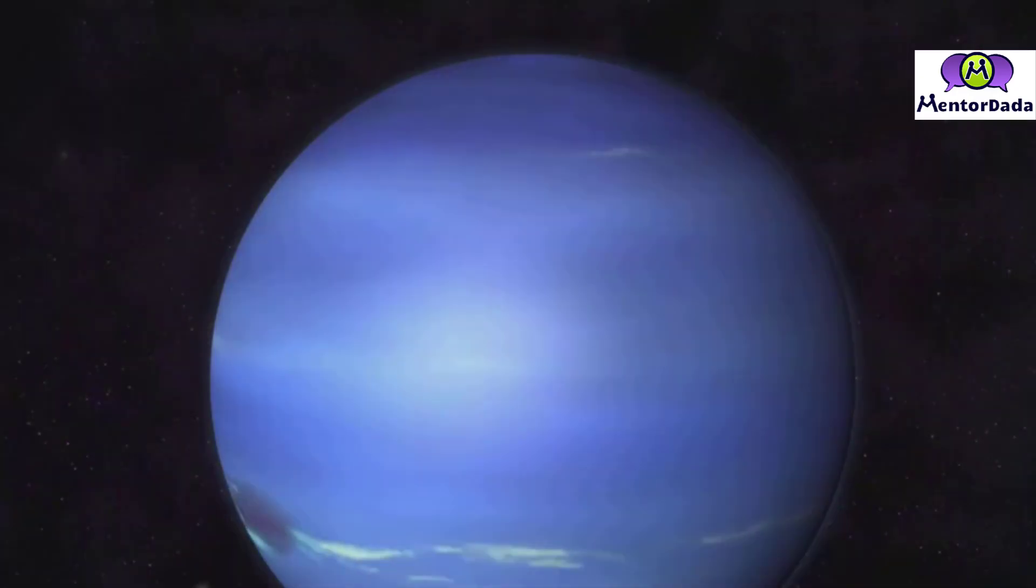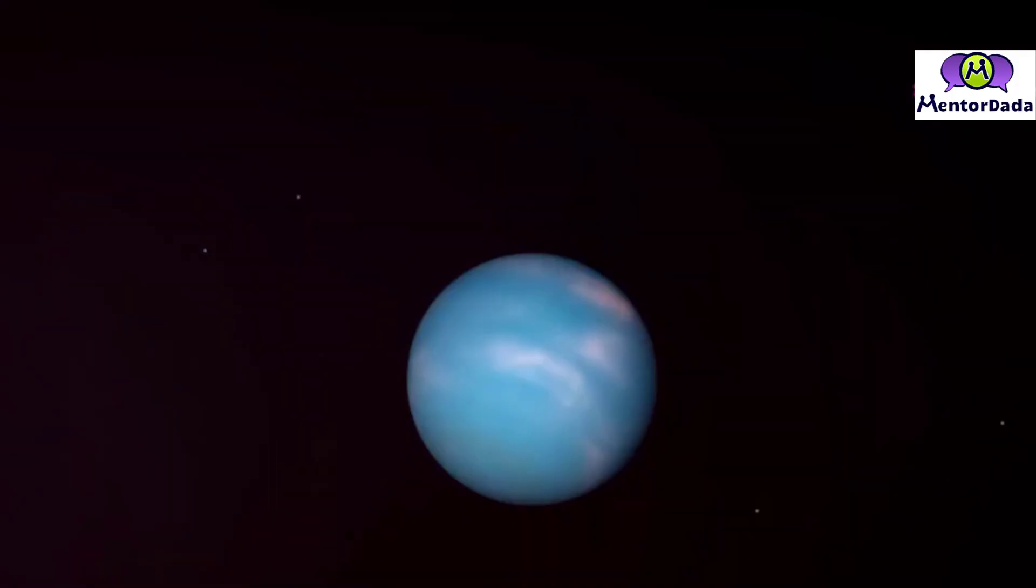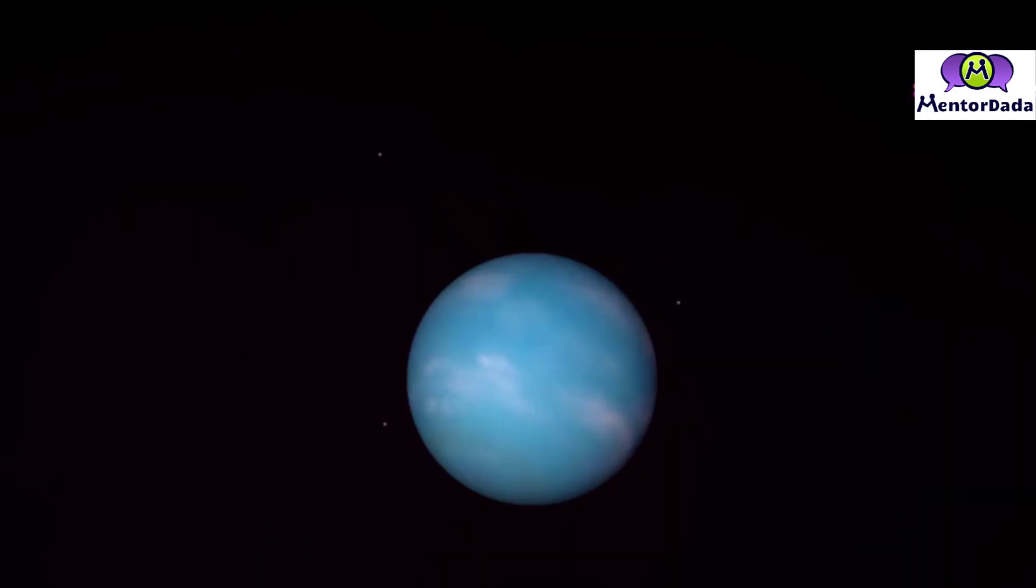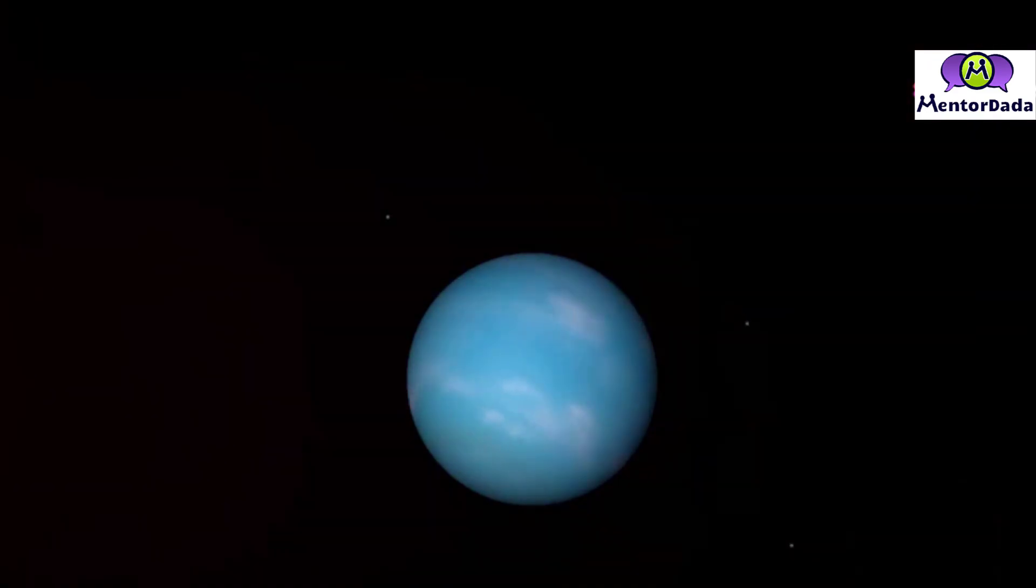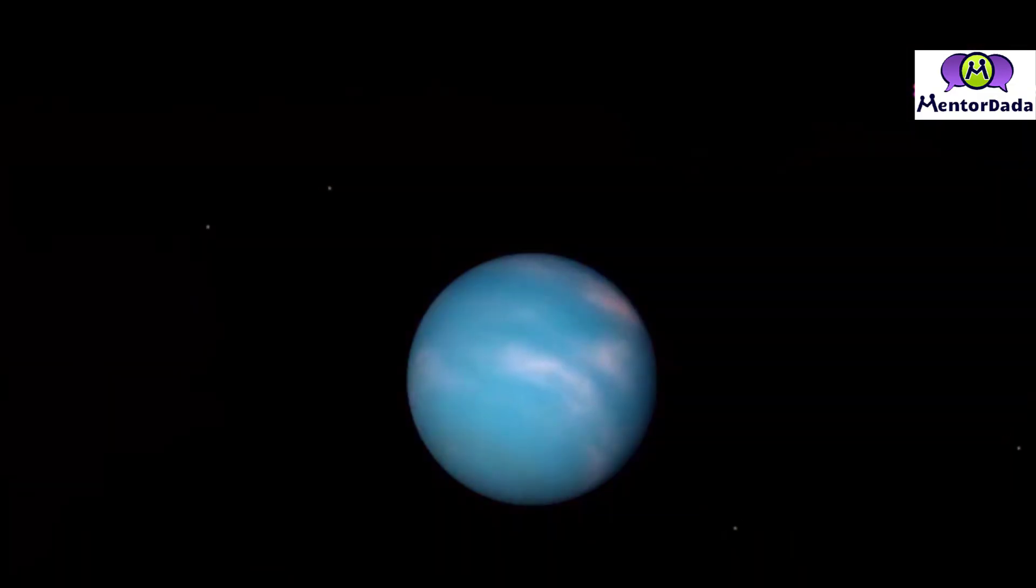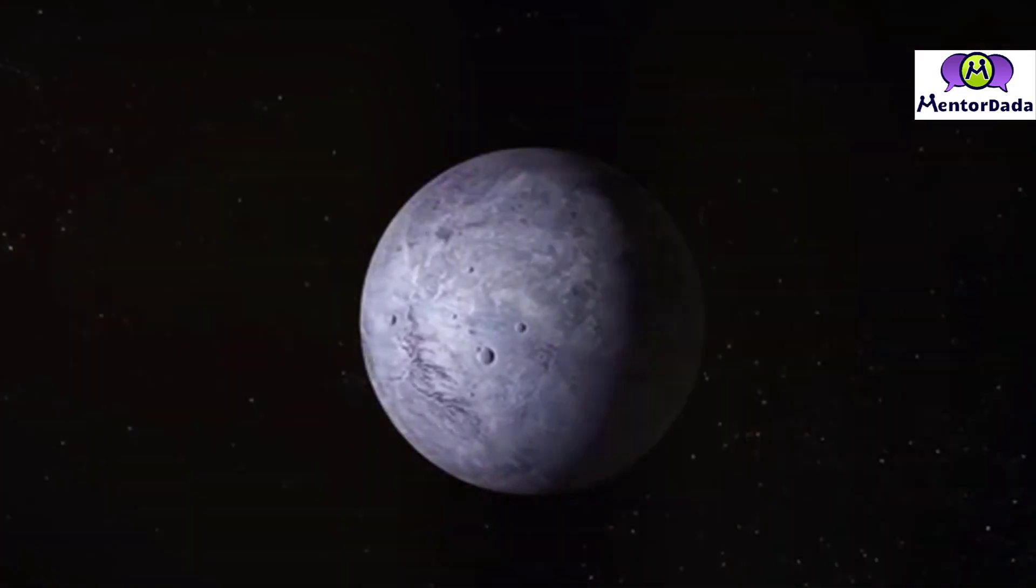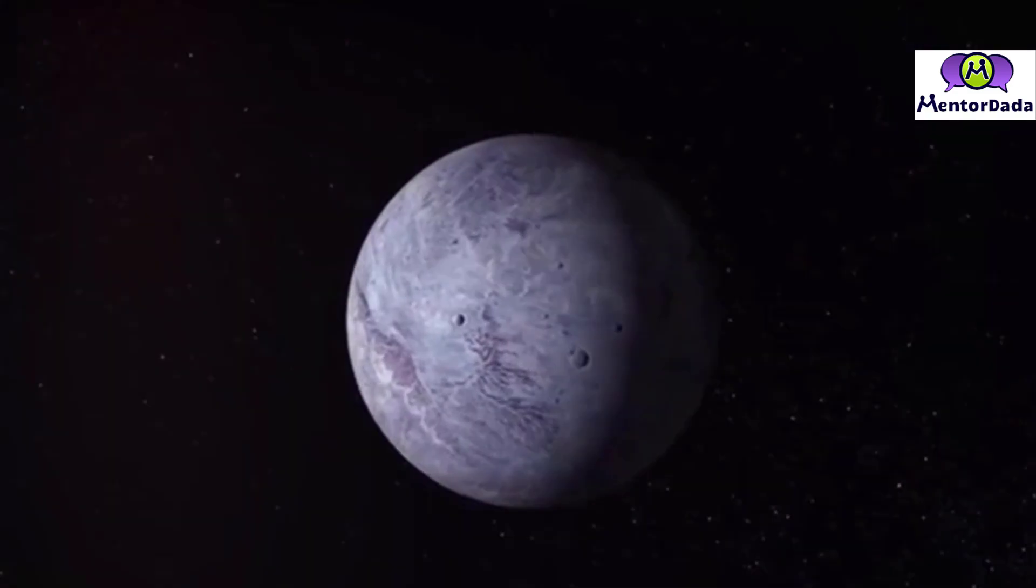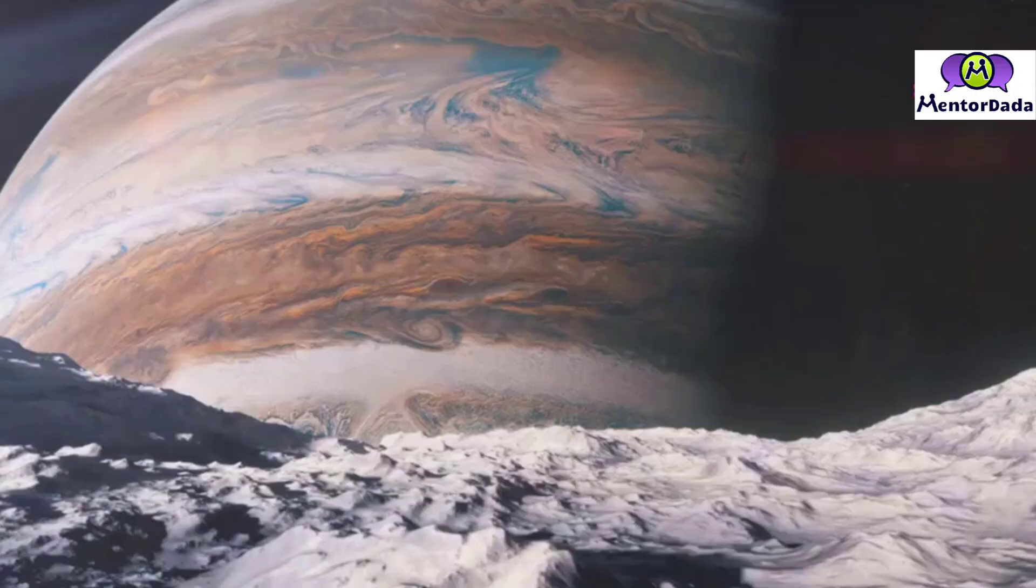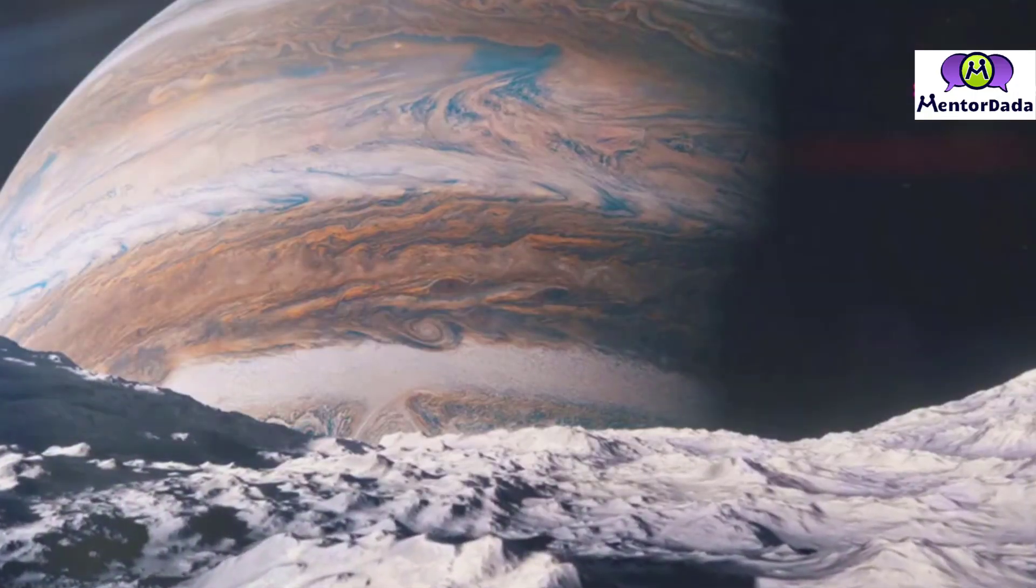During the alignment, Neptune will be the faintest of the planets, requiring a telescope to spot, but its presence reminds us of the vastness and mystery that still lie within our own solar system. As we gaze upon Uranus and Neptune during this rare alignment, let us contemplate the vast distances that separate us from these icy giants and the secrets they hold within their frigid depths.